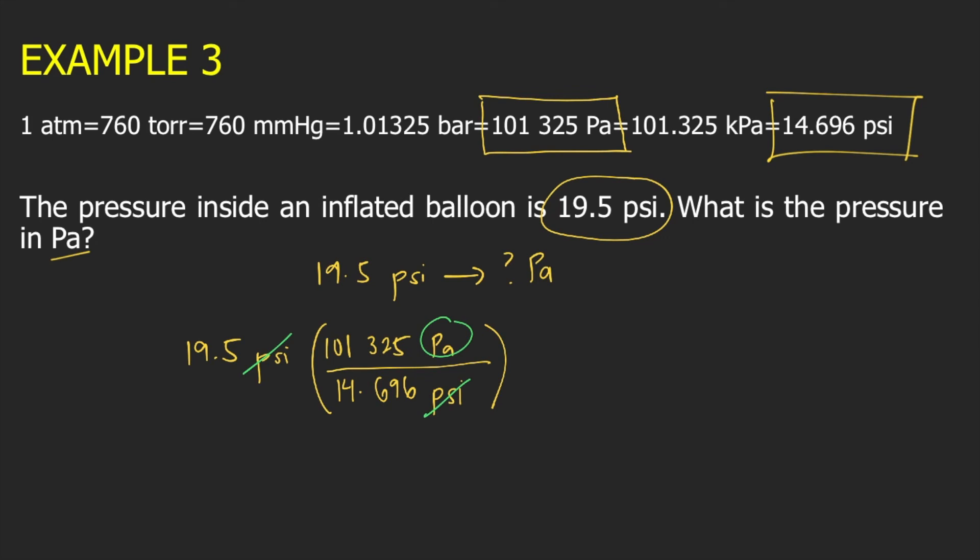And if you solve this in your calculator, 19.5 times 101,325 divided by 14.696. This is equal to approximately 134,447 Pascal. And this is the answer to the question. Thank you.